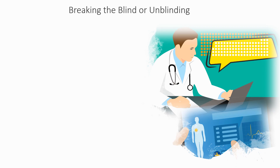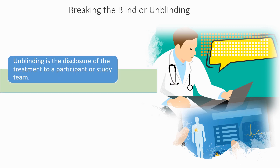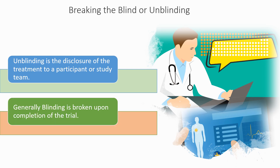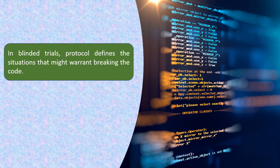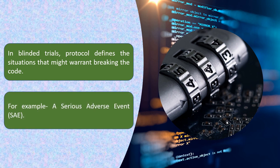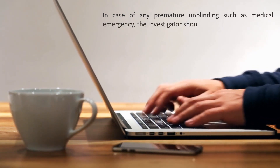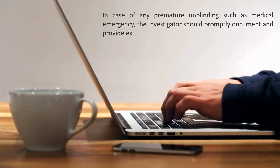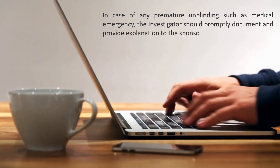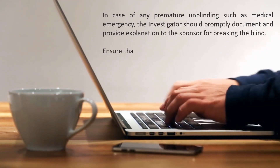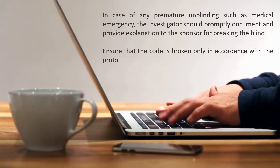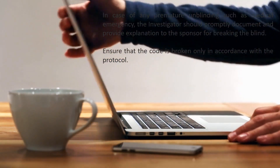Unblinding is the disclosure of the treatment to a participant or study team. Generally, blinding is broken upon completion of the trial. In blinded trials, the protocol defines the situations that might warrant breaking the code, such as a serious adverse event. In case of any premature unblinding, such as a medical emergency, the investigator should promptly document and provide explanation to the sponsor. The investigator also needs to ensure that the code is broken only in accordance with the protocol.